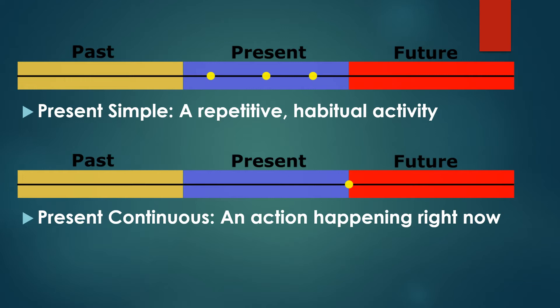We usually see the present tense in two forms in Latin, as we often use in English. The first is the present simple, which refers to a repetitive, habitual activity that happens in general — for example, 'I go to the market.' On the other hand, the present tense can also appear as a continuous form, referring to an action happening right now, at this exact moment of speech. This form is indicated by the verb 'to be' and the present participle — the 'ing' form.